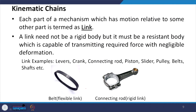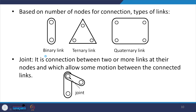Links should not deform significantly. A belt can be treated as a flexible link, and a connecting rod as a rigid link — but both are resistant bodies capable of transmitting the required force with negligible deformation. Based on number of nodes for connection, there are binary links (two connections), ternary links (three connections), and quaternary links (four connections).